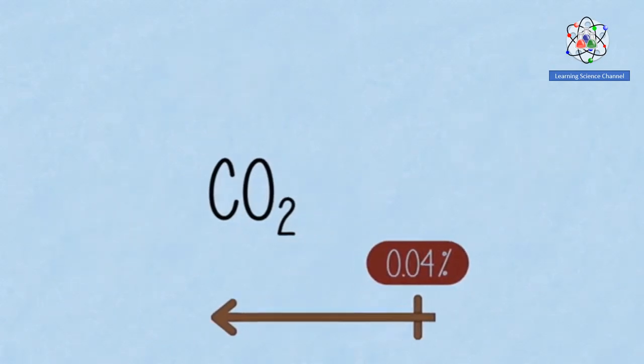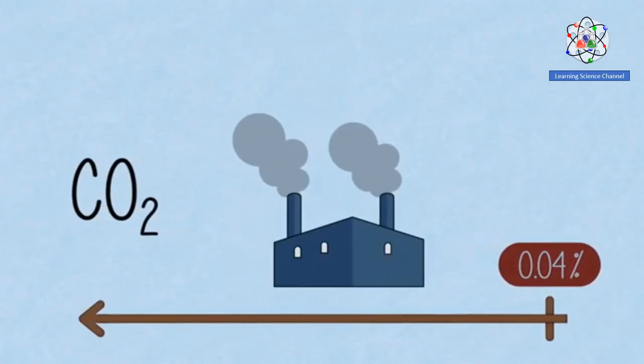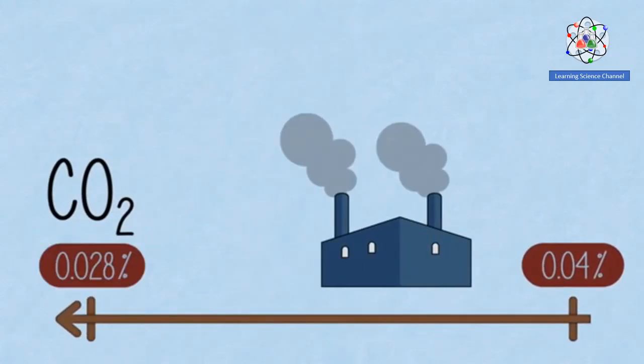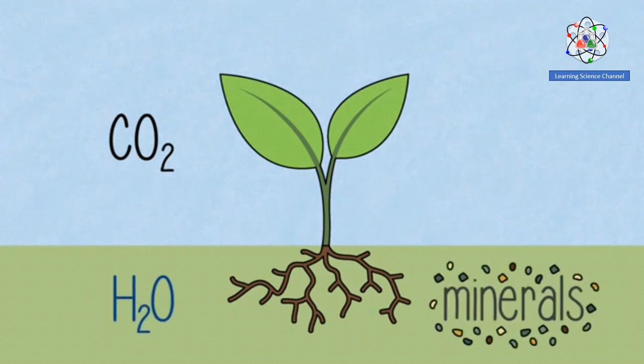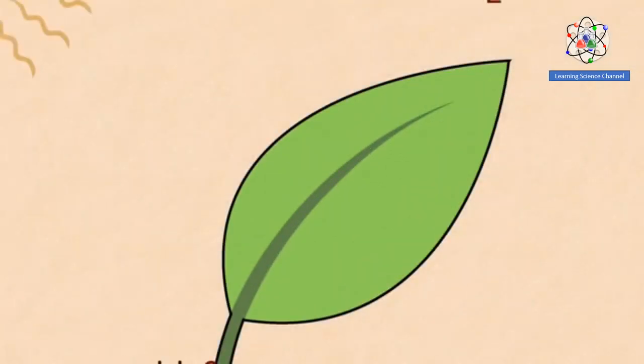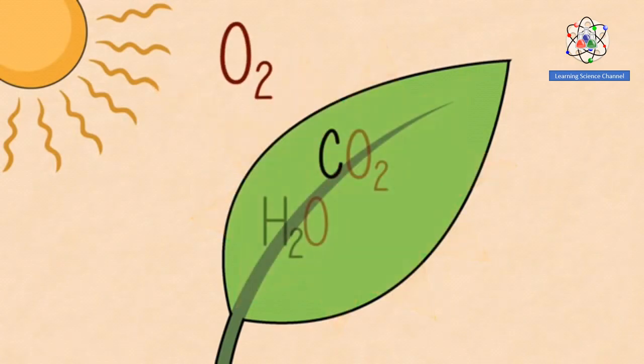But hundreds of years ago, before we started using fossil fuels, it was only 0.28%. Not much, you might think, but enough to enable plants to build up all the structures they need, with a little help from the water and minerals they take up from their roots and energy from the sun. Plants use the sunlight to pull oxygen away from water and carbon dioxide, allowing the plant to capture the carbon.